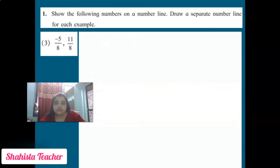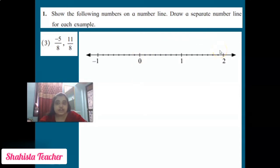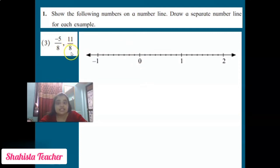First draw the number line with center zero. The denominator is 8, so we take a distance of 8 for each interval. Don't count zero — go forward: 1, 2, 3, 4, 5, 6, 7, 8 — on the 8th position we put 1. Leave 1 and count again 1 through 8 — we put 2 on the 8th position.